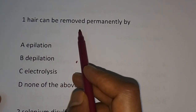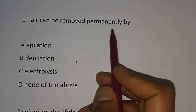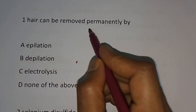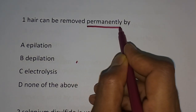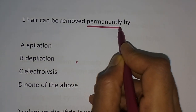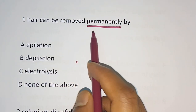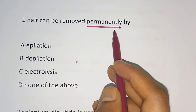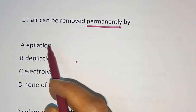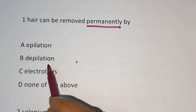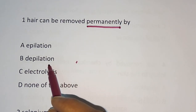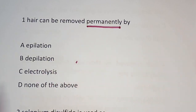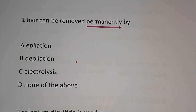Question number 1: Hair can be removed permanently by — note the word 'permanently.' Options are: A) Epilation, B) Depilation, C) Electrolysis, D) None of the above.